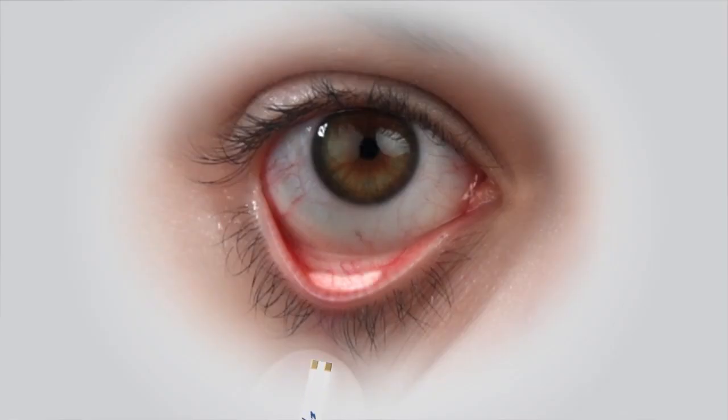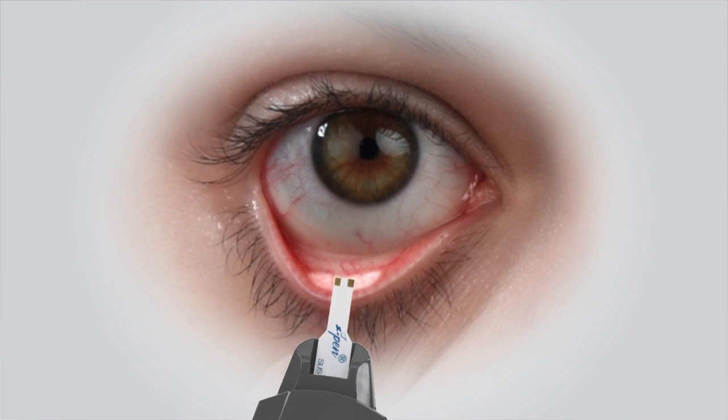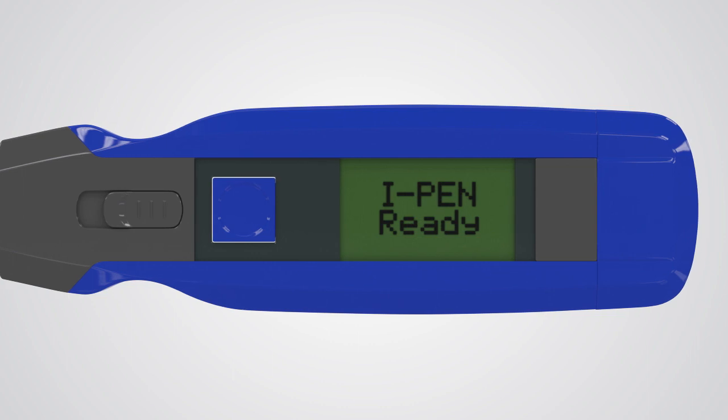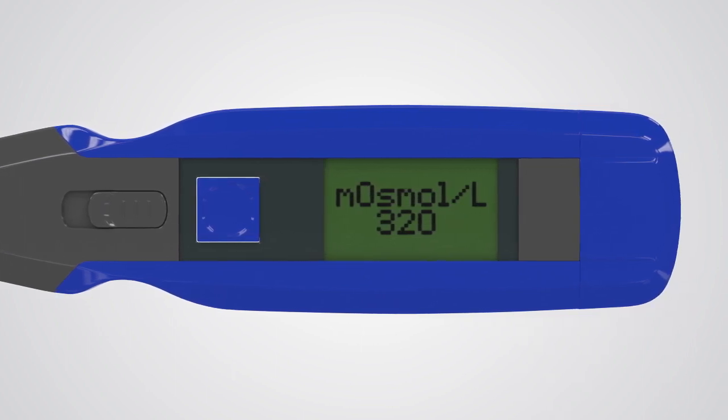When correctly placed, the tip of the single-use sensor should be depressing the surface slightly so both gold terminals on the tip of the single-use sensor are in good contact with the conjunctiva. The iPen will emit an audible beep after taking 250 readings in several seconds and will display the results on the LCD screen.